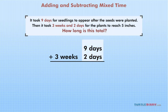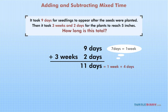Next, we add the days column. 9 plus 2 equals 11 days. But that is more than a week. Thus, we need to carry the remainder. There are 7 days in a week, so 11 days is 1 week plus 4 days. We'll carry the 1 week to the weeks column and put down 4 in the days column.